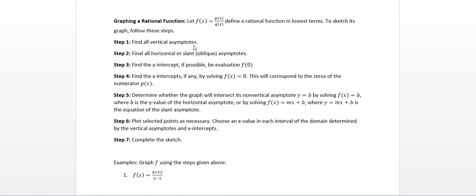In order to sketch its graph by hand, we're going to follow these steps. First step, find all vertical asymptotes. Second step, find all horizontal or slant asymptotes. Oblique is another word for slant asymptotes. We're going to find the y-intercept, if possible, by evaluating f of 0. Find the x-intercepts, if any, by solving f of x equals 0. This will correspond to the zeros of the numerator p of x.